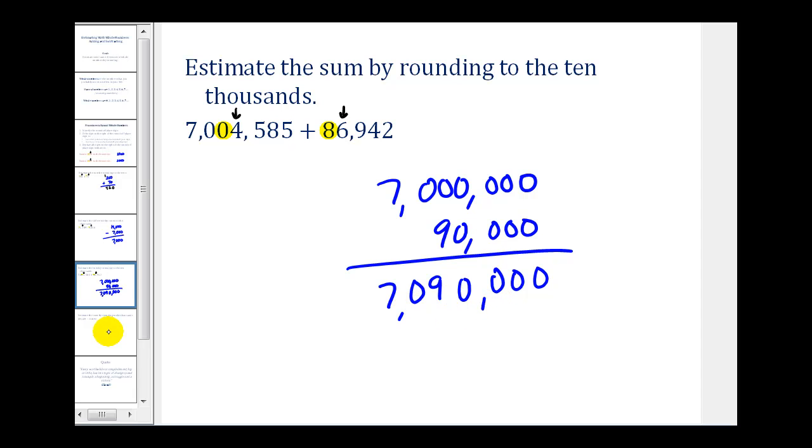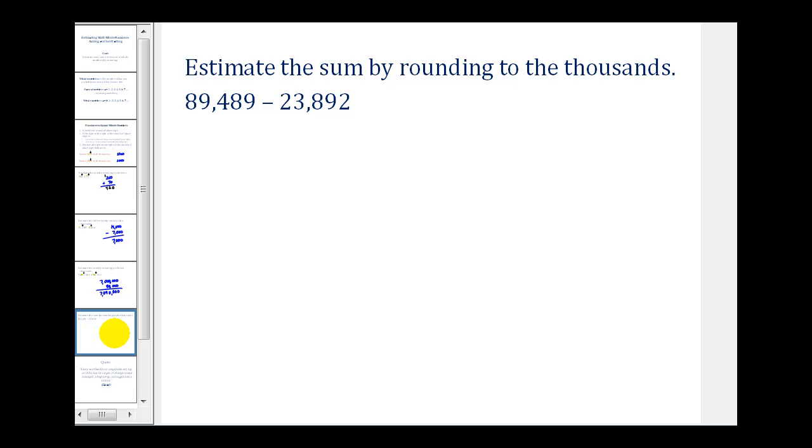Let's take a look at one more. Now we're back to estimating a difference. And here we'll round to the thousands. The nine is in the thousands, and the three is in the thousands. This four here tells us to round down. This eight here tells us to round up.